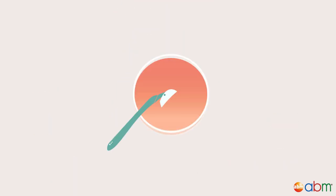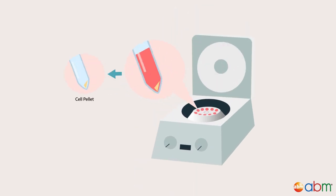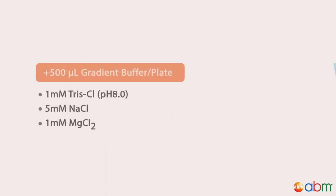Collect cells and supernatant using a cell scraper and centrifuge at 3,500 rpm for 20 minutes to pellet the cells. Resuspend the cells in 500 microliters of gradient buffer per plate. Resuspended cells can be stored at minus 80 degrees Celsius if purification will not proceed immediately after cell collection.